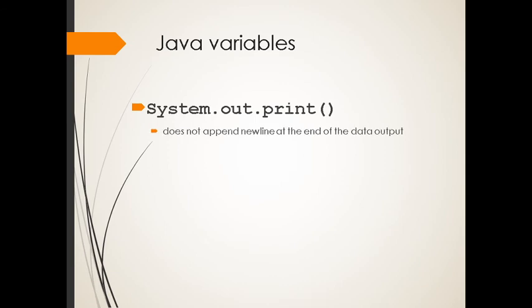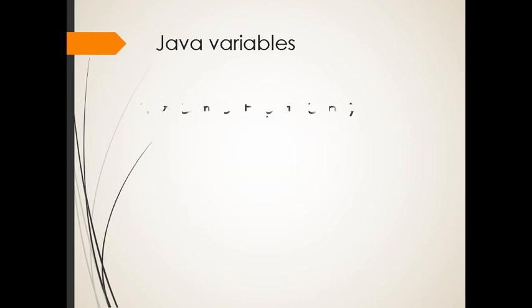System.out.print does not append newline at the end of the data output. So basically it will not append. Meaning it's not println. A good example for this one is this, and it will continue like this one.